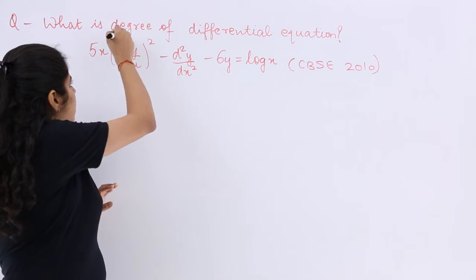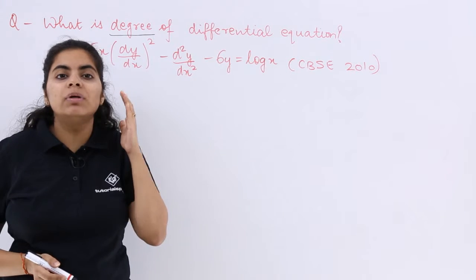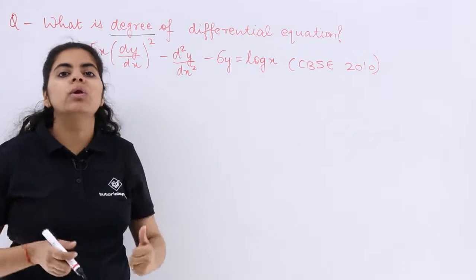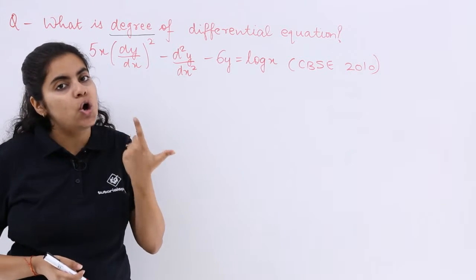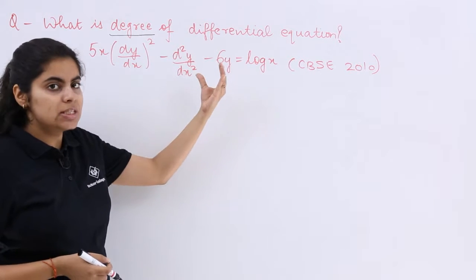The question talks about not order but degree, and now you have to remember what was degree. Degree was possible only first when you found out the order. This has various differential coefficients in the picture.